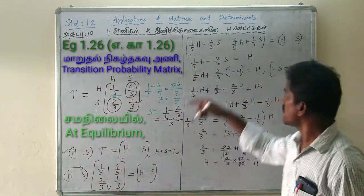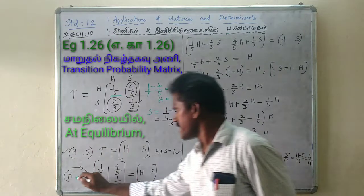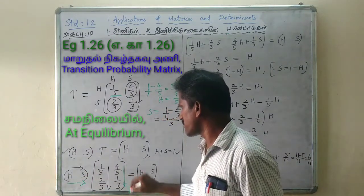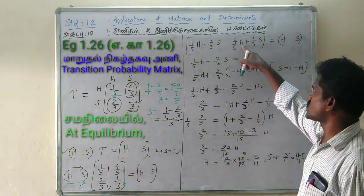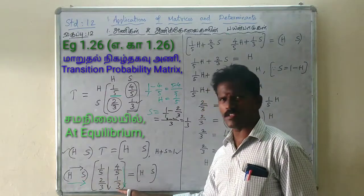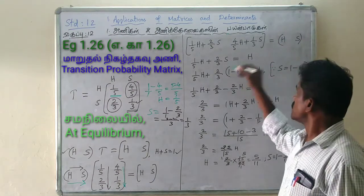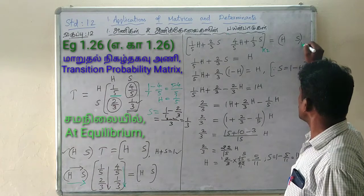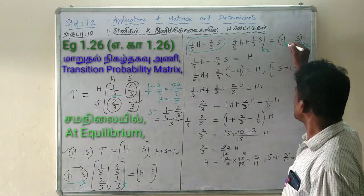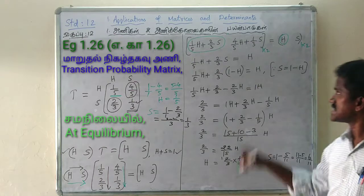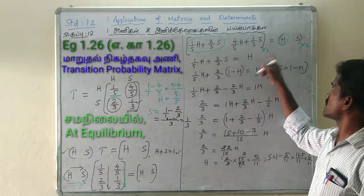H into 1 by 5, that is 1 by 5 H. S into 2 by 3, that is 2 by 3. So first row — you have to do it in the second column. H into 4 by 5, H 4 by 5 H plus S into 1 by 3, 1 by 3. Equal to H — so in the order 1 cross 2, one cross 3: equate 1 by 5 H plus 2 by 3 S equal to H.